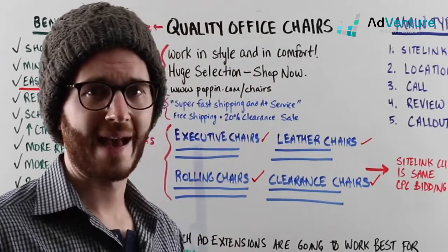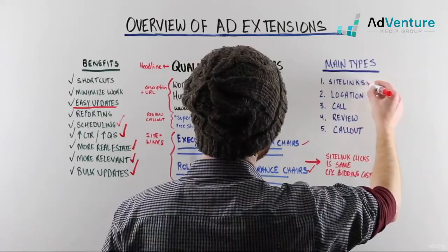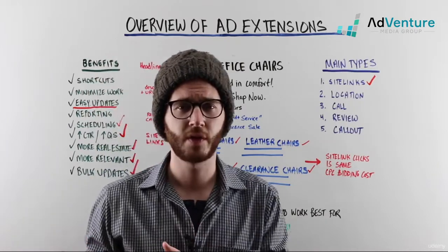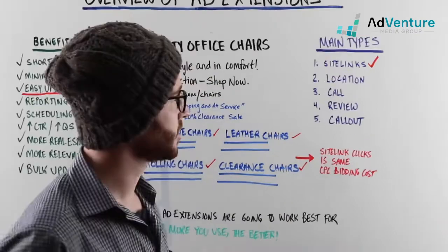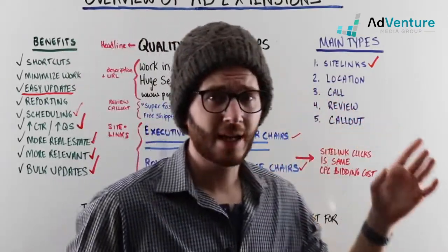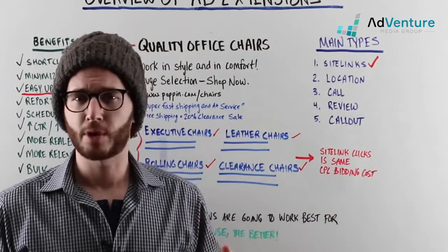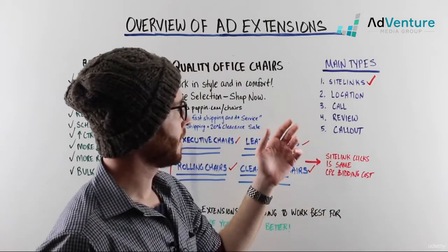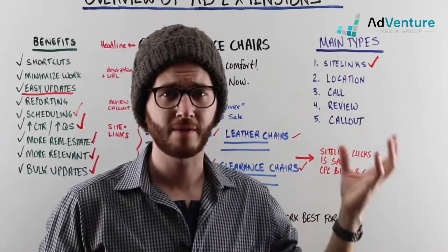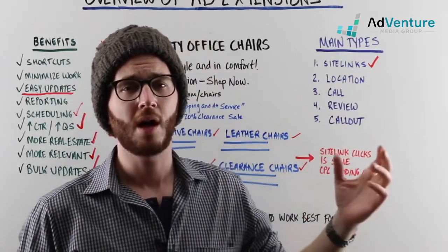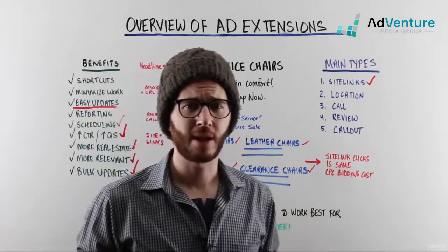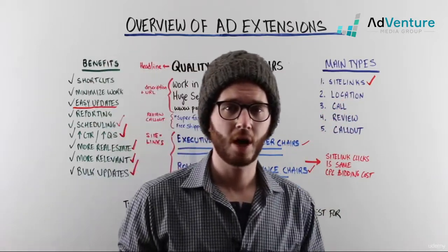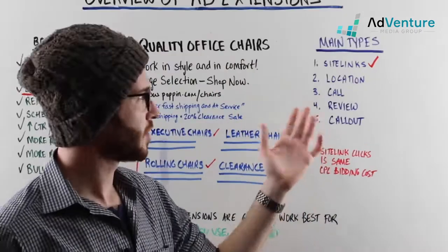Let's talk about the different types of ad extensions. We've already covered a lot about sitelink extensions, and there's more detail we'll cover in the next video when we create our own sitelink extensions inside the dashboard. You can create campaign-level sitelinks or ad group-level sitelink extensions — a very similar concept to campaign-level and ad group-level negative keywords. Campaign-level sitelinks are eligible to run on all ads in that campaign, while ad group-level sitelinks will only run on ads within that specific ad group.